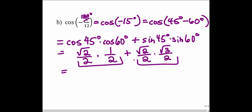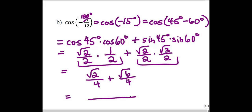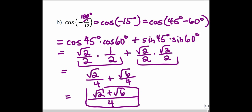Multiplying across the two fractions, we get √2/4 plus √6/4. Once again we have the same denominator, so we keep the same denominator and combine the two numerators on top. So the cosine value of negative 15 degrees, or negative π/12 in radians — they're all the same — that value is (√2 + √6) / 4.